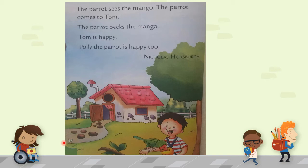Now I will tell you about the story. Tom's parrot was looking for something. Tom took a mango from his mother. When he saw the parrot, he went back to his mother. This way, Tom was happy and the parrot was happy too.